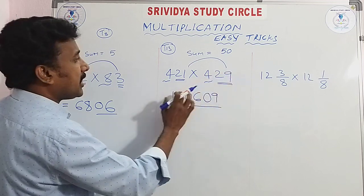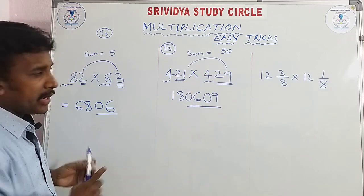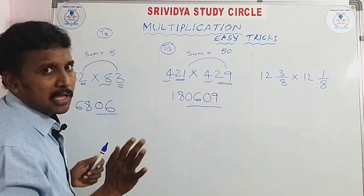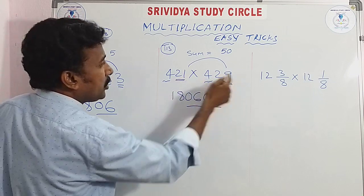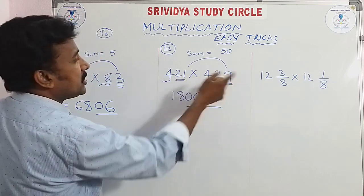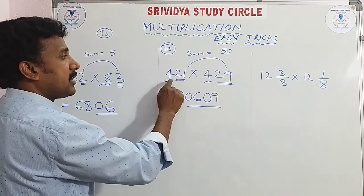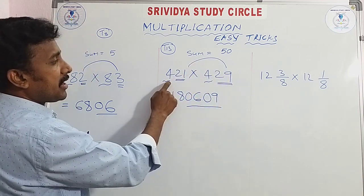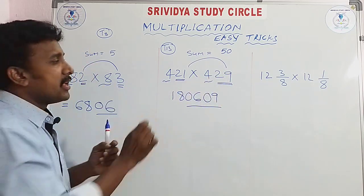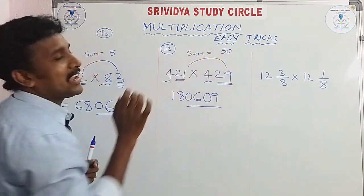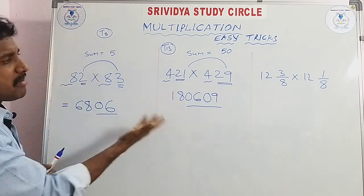121 × 129, 221 × 229 — all of these follow the same rule. 21 × 29, 22 × 28, 23 × 25, 23 × 27, 24 × 26, 426 × 424, 324 × 322 — the total of all these digit pairs is 50. Hundreds of problems are the same — you can do all of them!